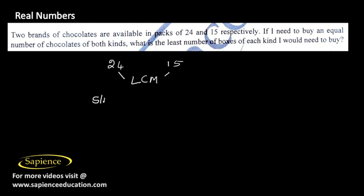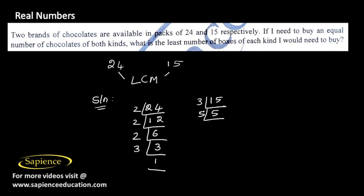Let us find LCM using prime factorization method. So 24 divided by 2 will give us 12, and 12 by 2 is 6. 6 by 2 will be 3 and 1. Same way prime factorizing 15: 15 by 3 is 5, and 5 times 1 is 5.